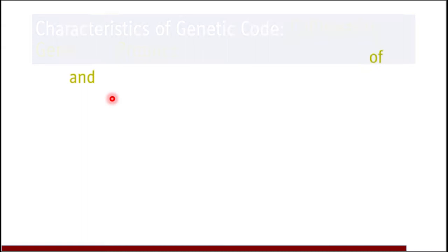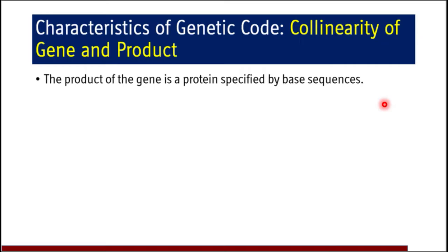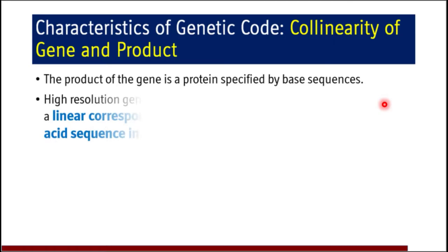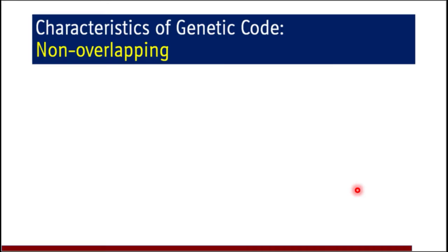The genetic code has been highly preserved during evolution. The next characteristic is collinearity of the gene and its product. The product of the gene is a protein specified by the base sequence present in mRNA. It is established by high-resolution genetic mapping that there is a linear correspondence between the base sequence in the gene and the amino acid sequence in the protein — the information in the gene and the information translated into protein are collinear.